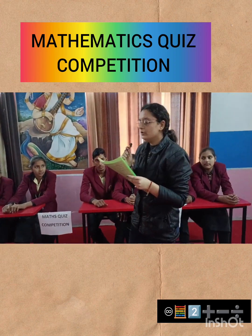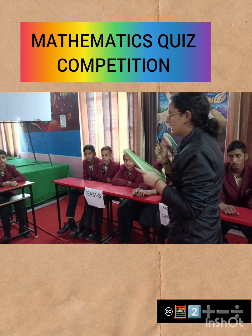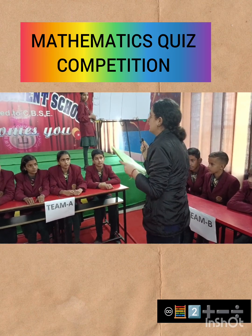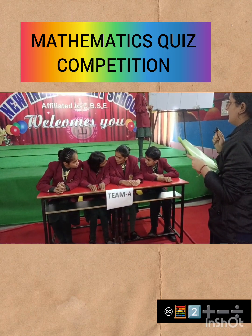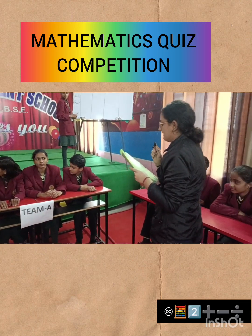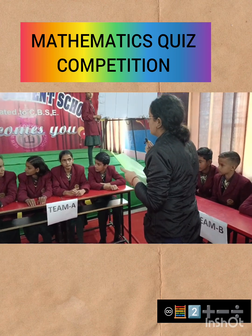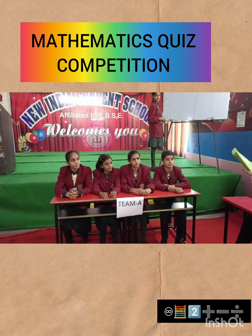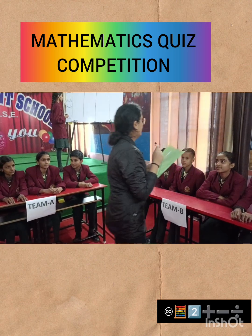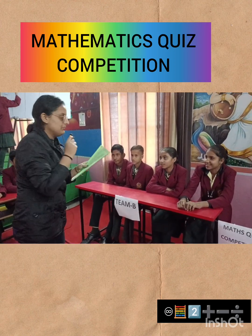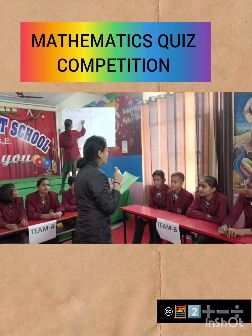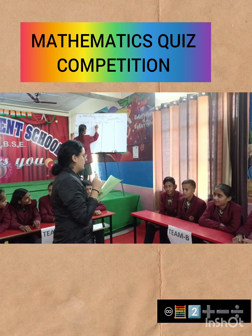Team A, your first question is: dash is called the identity for the addition of rational numbers. You have 45 seconds. Team A gives a wrong answer. Team B answers: zero. Zero is the right answer, so Team B will get two and a half marks.